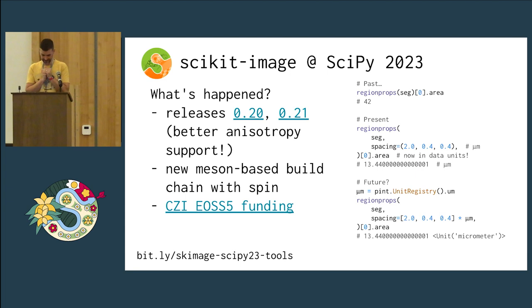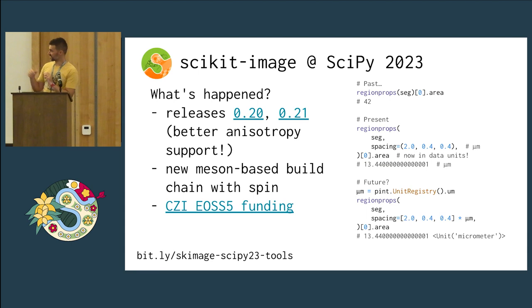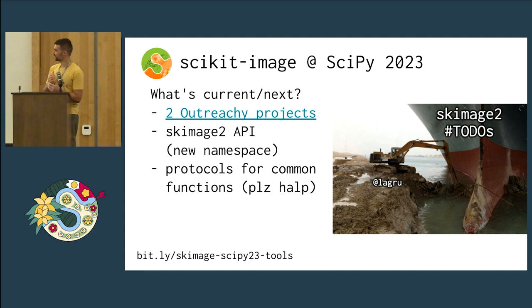We were told two slides, and we stuck to two slides. We've done a couple of releases with better anisotropy support. If you have data where your Z slices are not spaced the same as your pixels, it's now easier to get useful information out of Scikit-Image. We're really leaning into being better for measurement, because while a lot of people have deep learning pipelines for segmentation, you still ultimately want to get measurements out of your objects. You can now add spacing to get to your region props, and in the future we will add unit support — hopefully working with any array API compliant quantity. We've also got a new build chain, and we received EOSS5 funding.